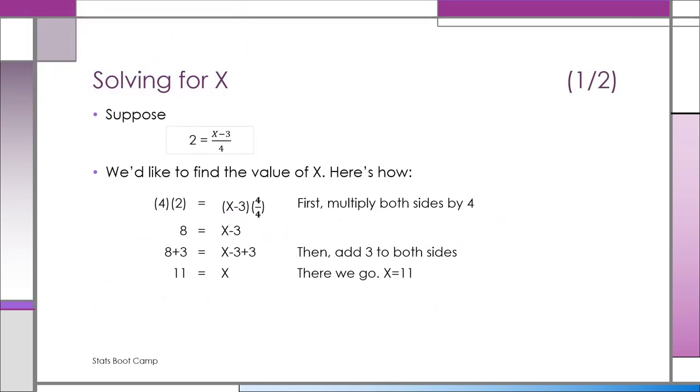Here we have one equation, one unknown. 2 equals x minus 3 divided by 4.